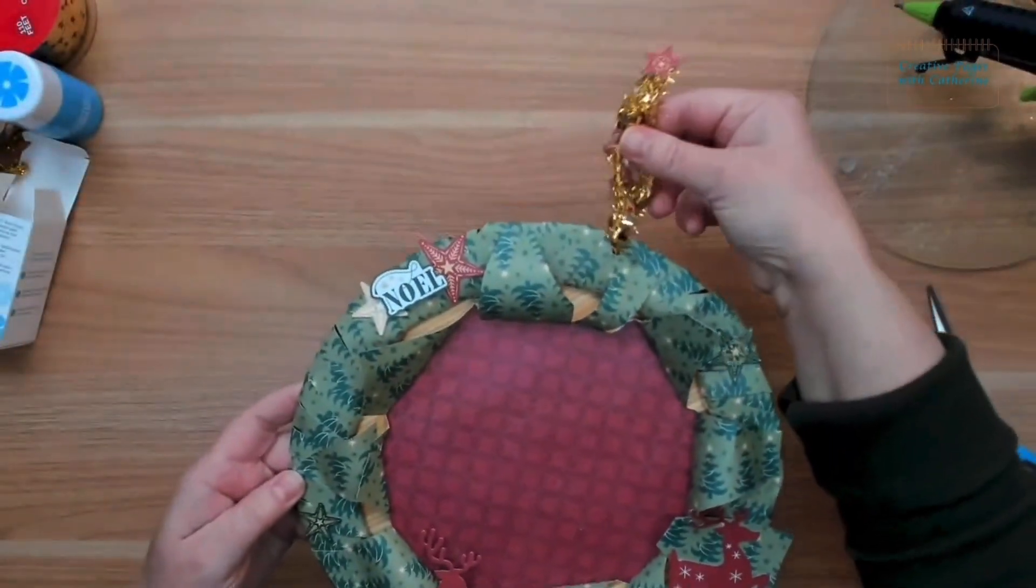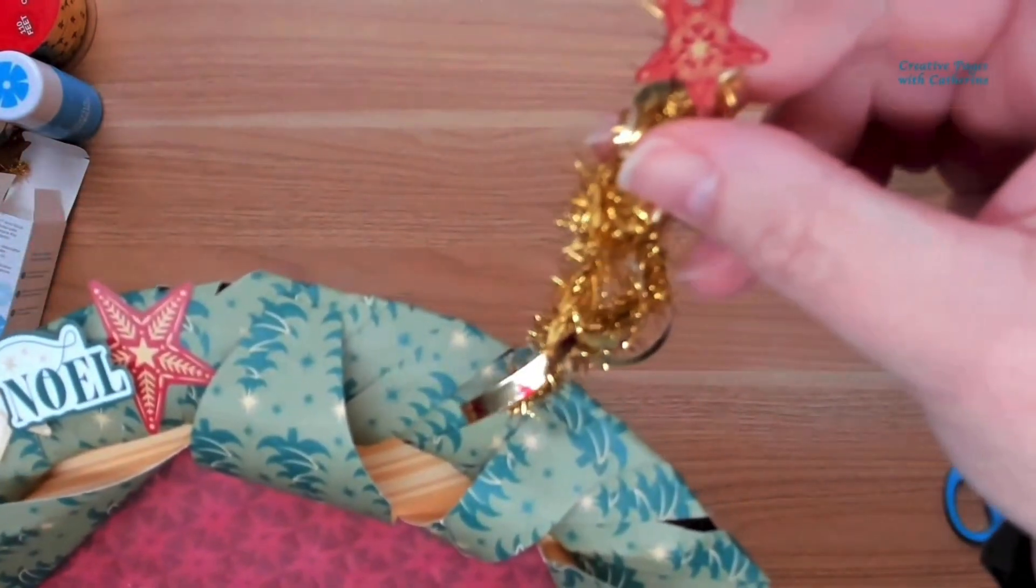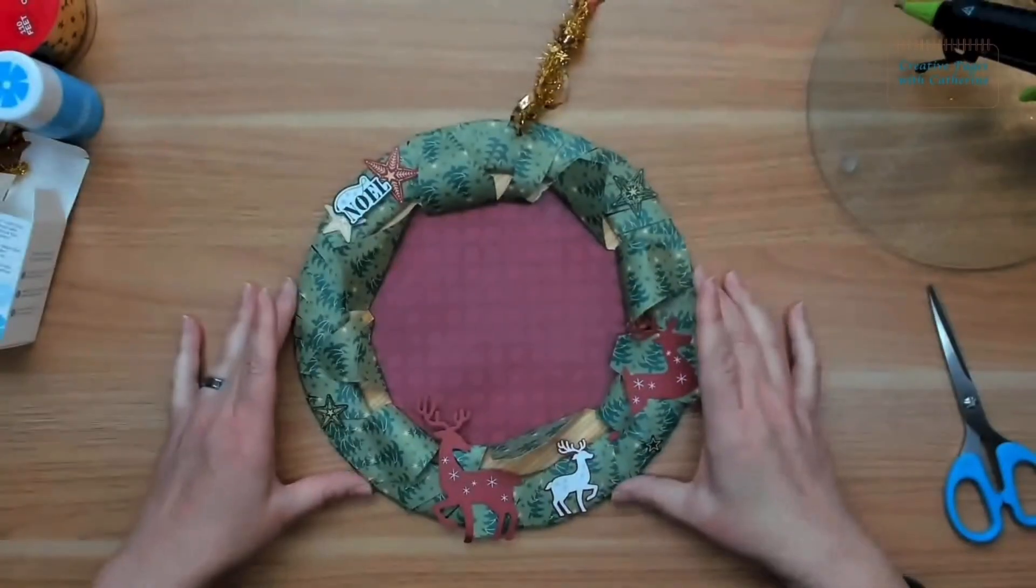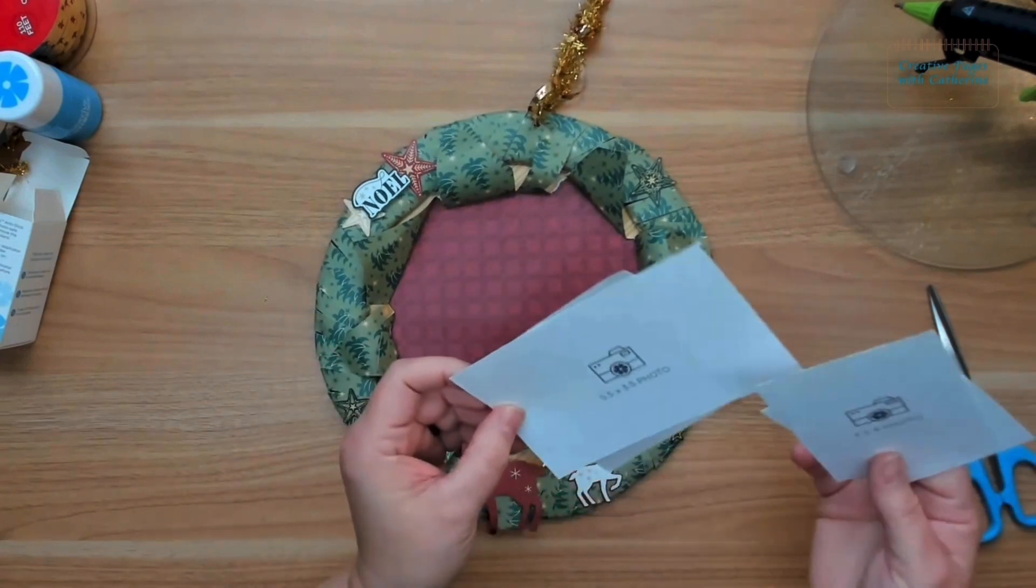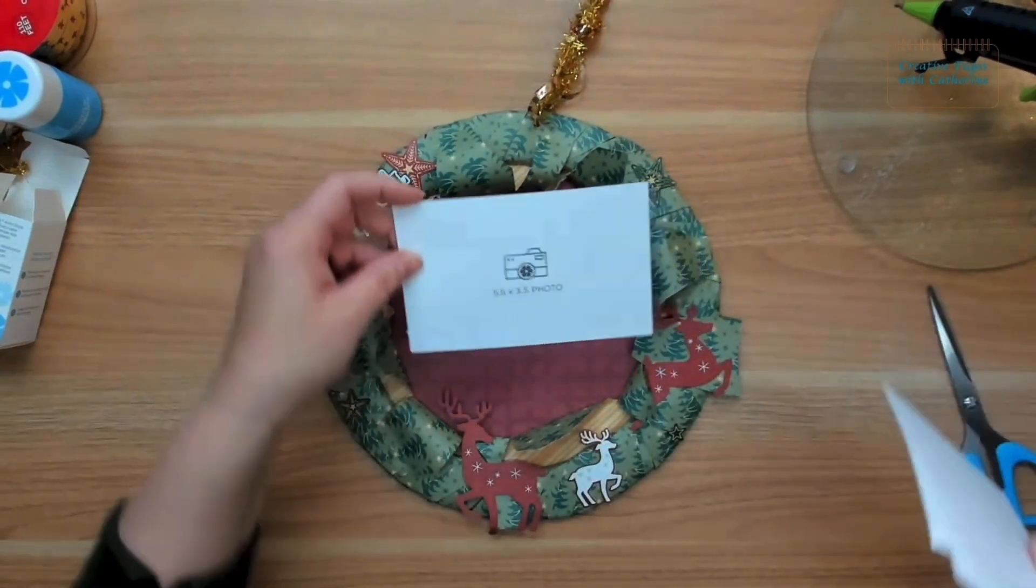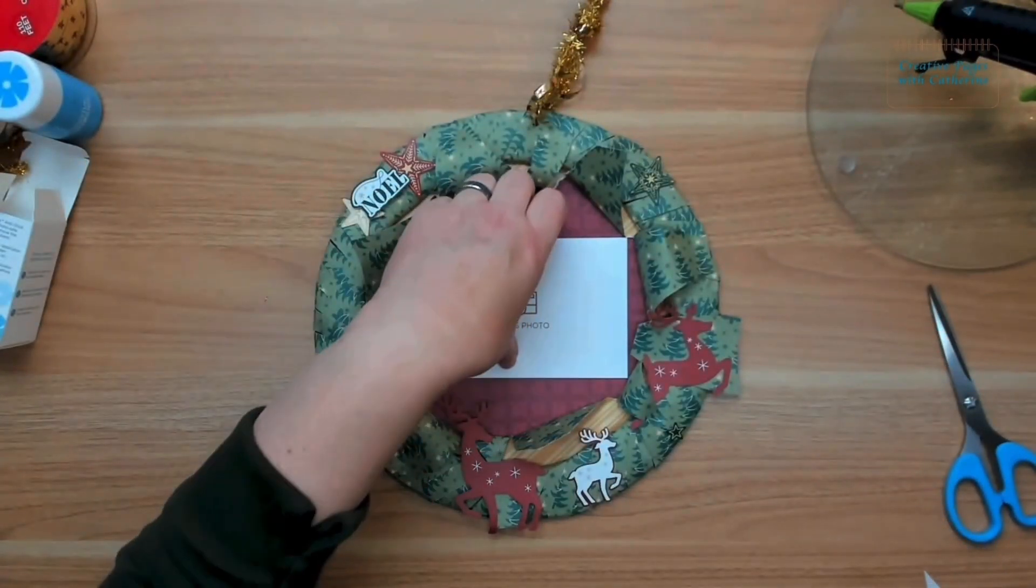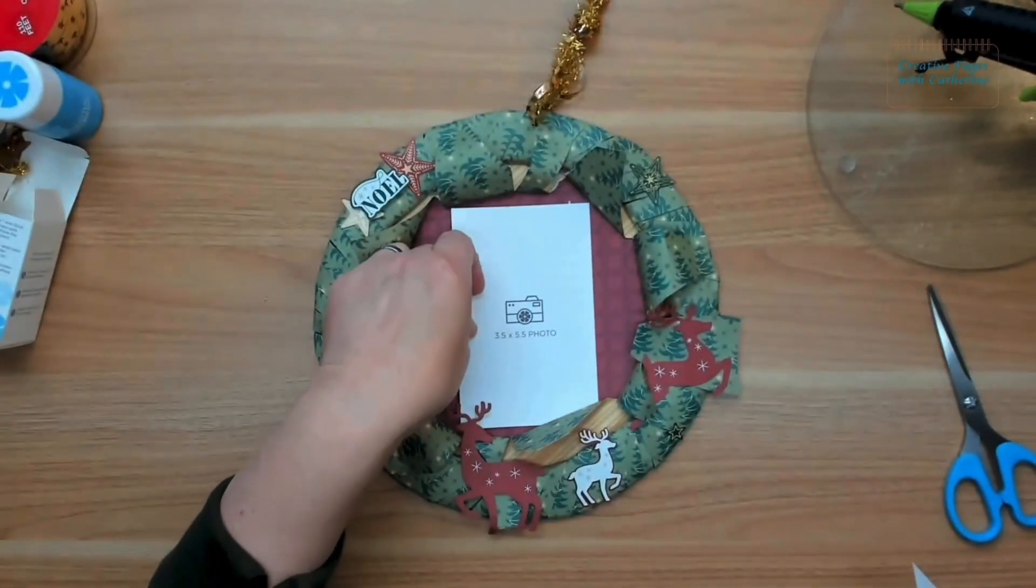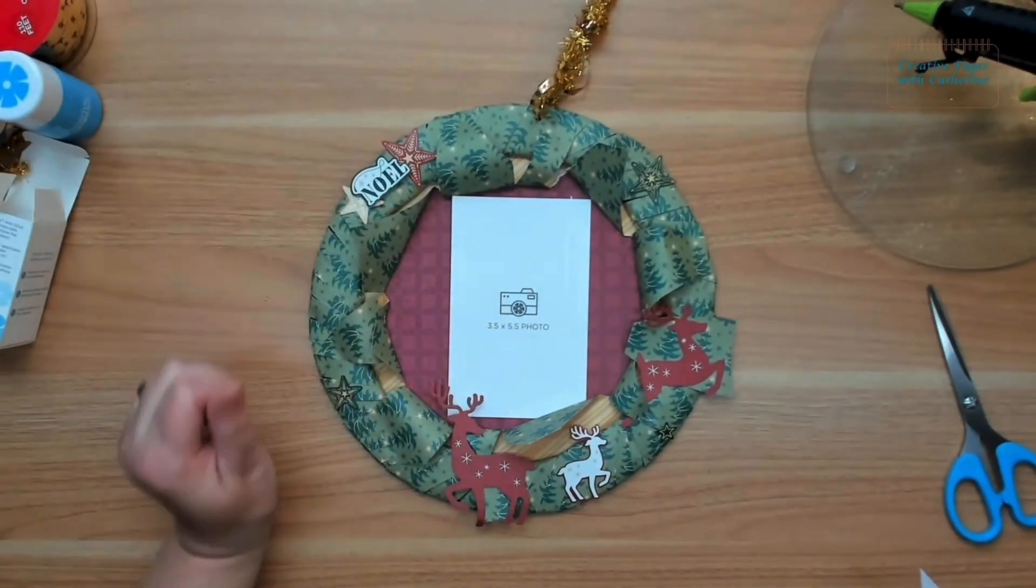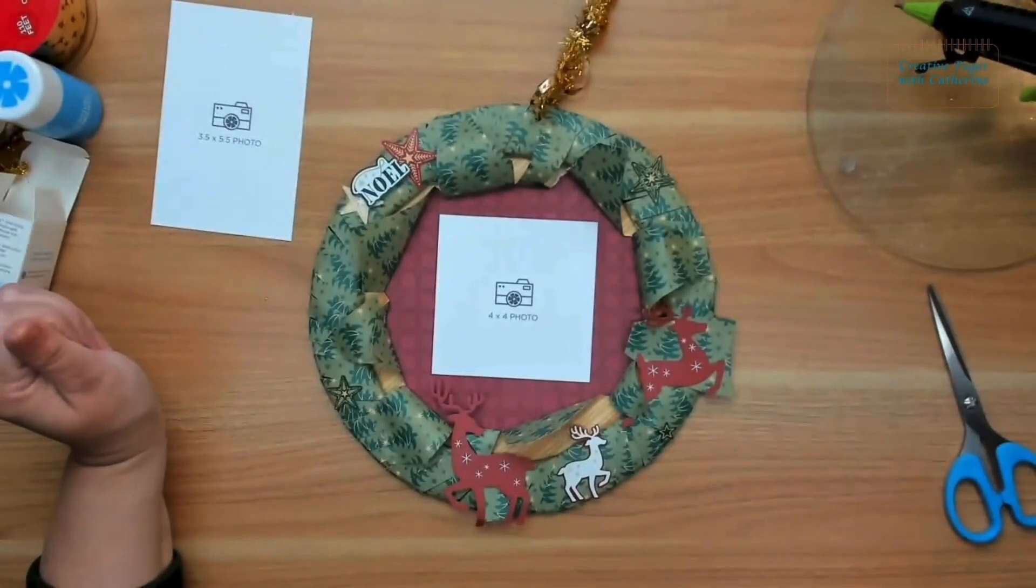I also pulled out my jumbo circle from Creative Memories, our custom cutting system. Every time you purchase one of our cutting system pieces, you get one of these that helps you figure out which blades you need to use. I did some measurements. You can see our wreath is just a little bit smaller than our jumbo circle. We are going to go ahead and get cutting here.